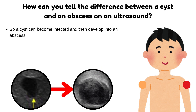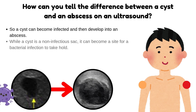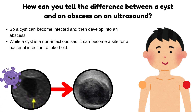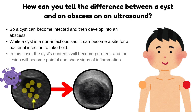In summary, a cyst can become infected and then develop into an abscess. While a cyst is a non-infectious sac, it can become a site for a bacterial infection to take hold. In this case, the cyst's contents will become purulent, and the lesion will become painful and show signs of inflammation.